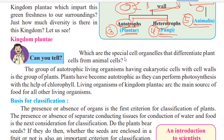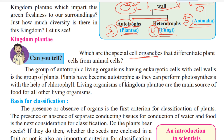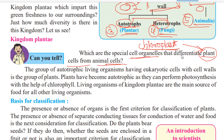Which are the special cell organelles that differentiate a plant cell from an animal cell? Chloroplasts are only present in plant cells. Due to the presence of chloroplasts, plants have a green color, and they perform the process of photosynthesis. Autotrophic living organisms make their own food, just like plants.